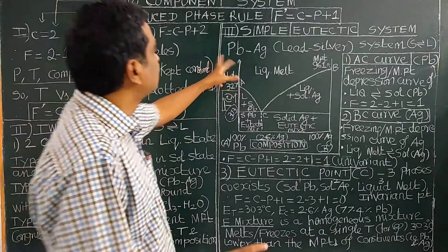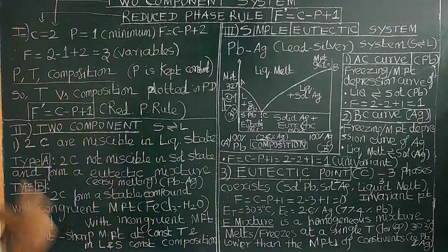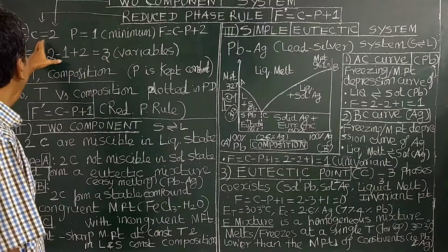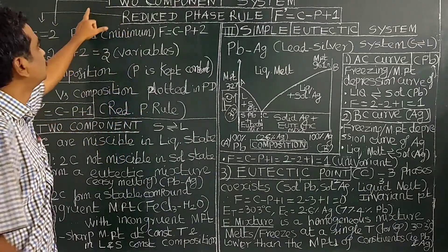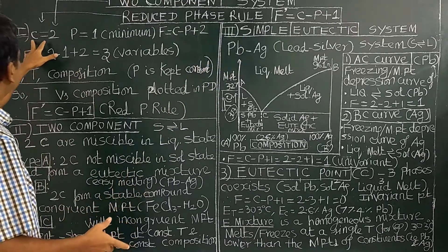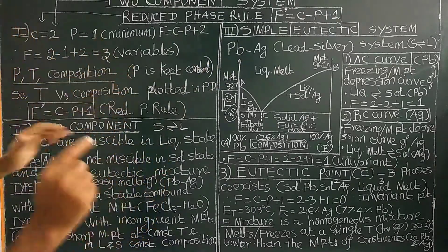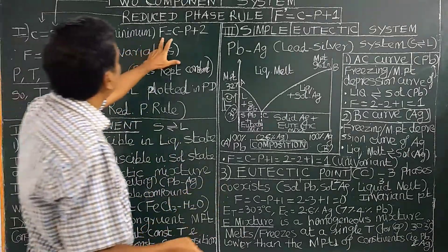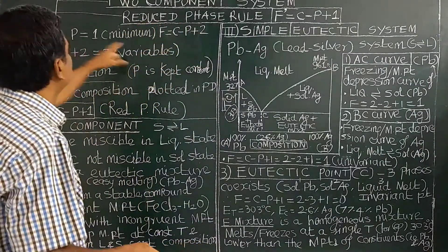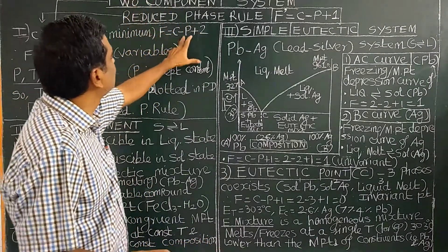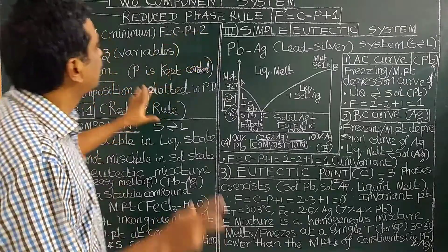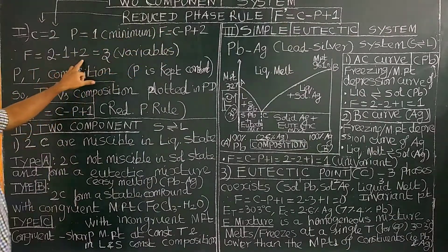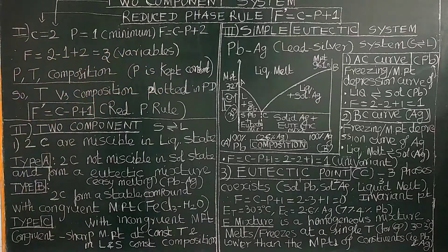For a two-component system, C equals 2. For lead and silver or any other two-component system, C equals 2 and P equals 1 for the minimum number of phases. Let us apply the phase rule: F = C − P + 2. With C = 2 and P = 1, F = 2 − 1 + 2 = 3. There are three degrees of freedom — three independent variables required to define the system completely.